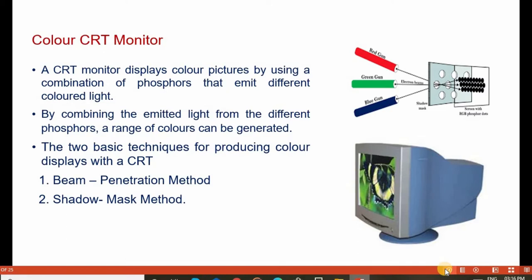Color CRT monitor is a device which is used to display a variety of colors by using combinations of phosphors. We can have different combinations of phosphors to get new different colors that emit different color light. The image shows different color guns such as red gun, green gun, and blue gun. Each color gun emits the respective color electron beam. By combining the emitted light from different phosphors, a range of colors can be generated on the CRT screen.